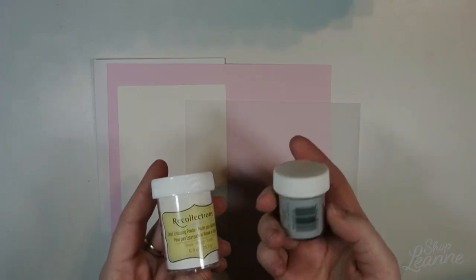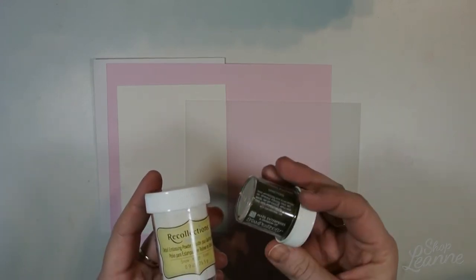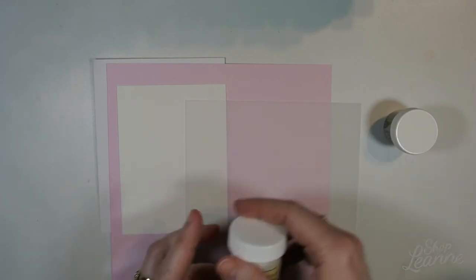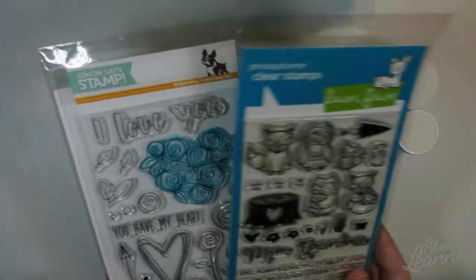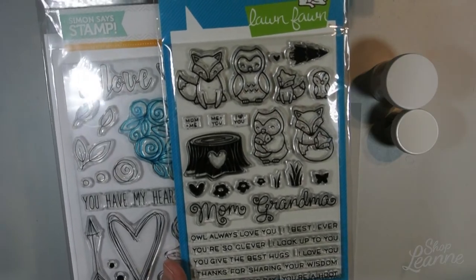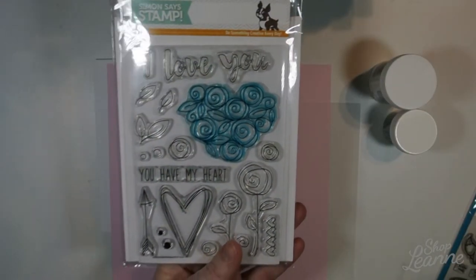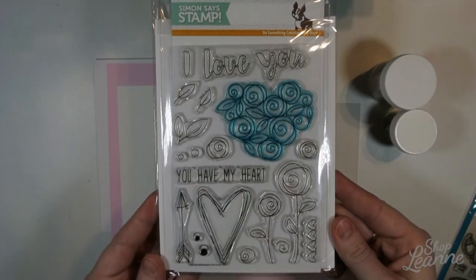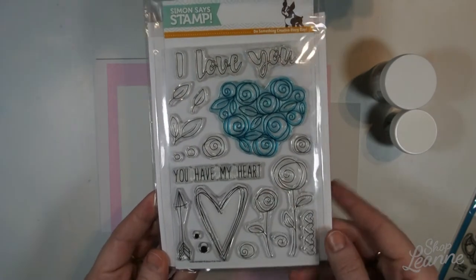This is what I'm going to use for embossing. I have white embossing powder and then some gold embossing powder. And these are the stamp sets that I'm using. I'm going to use the sentiment from the Mom and Me stamp set from Lawn Fawn, and then this is the Roses for You stamp set from Simon Says Stamp that I mentioned.